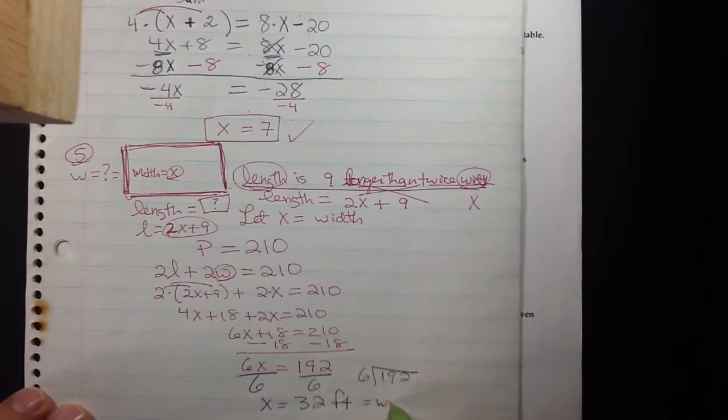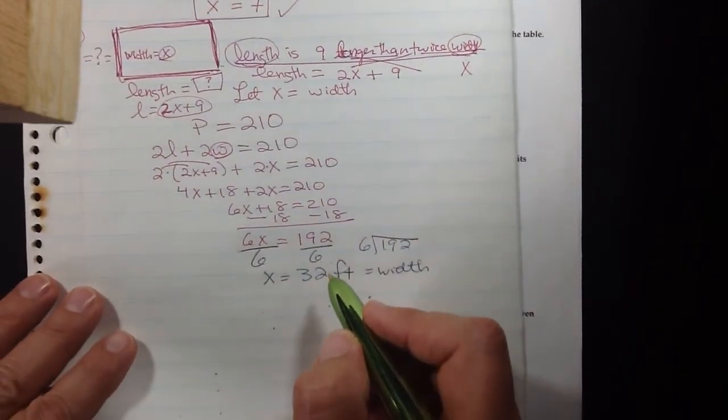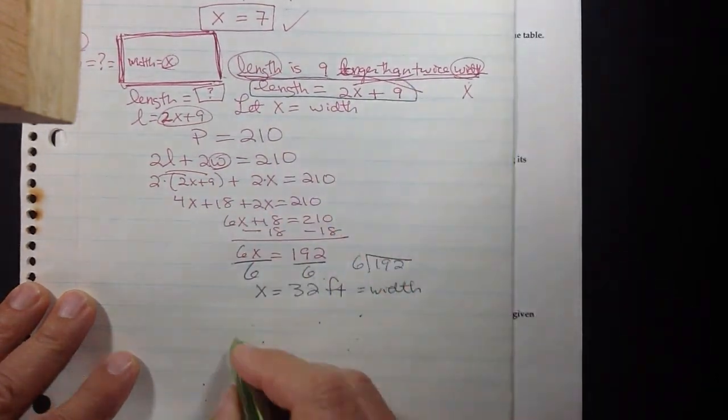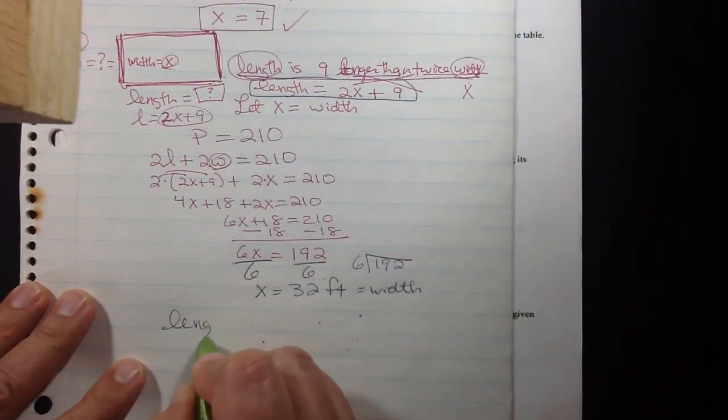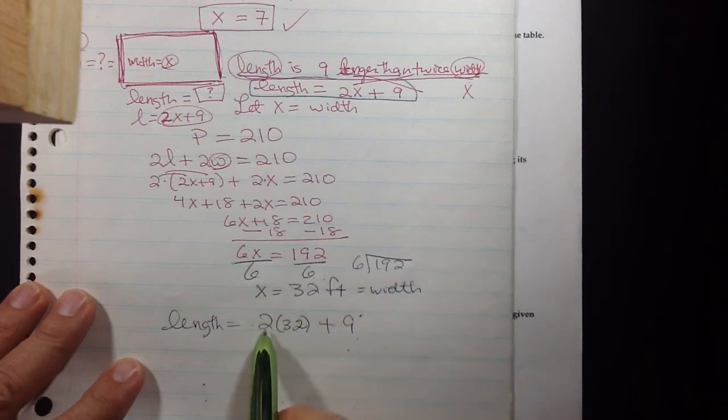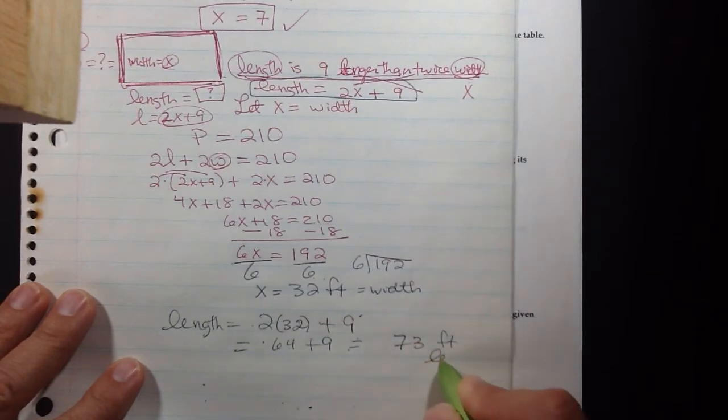And now with this new information that X is 32, I can figure out that the length, the length which is 2X plus 9. I have this new information that X is 32, so 2 times 32 is 64, and when you add 9 to 64 you get 73 feet for the length.